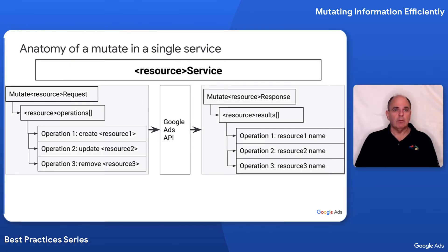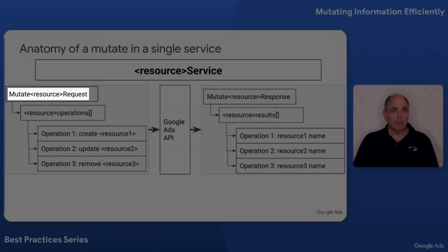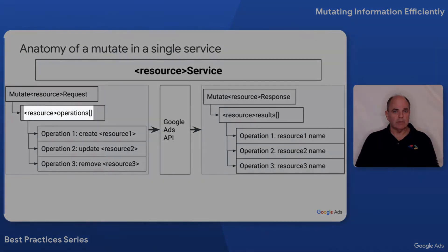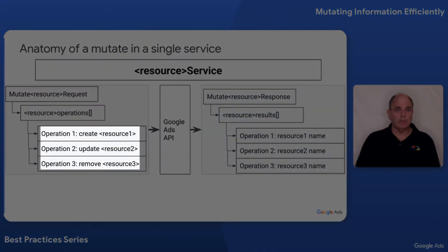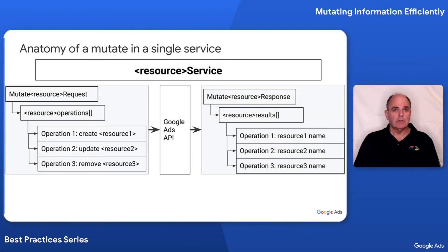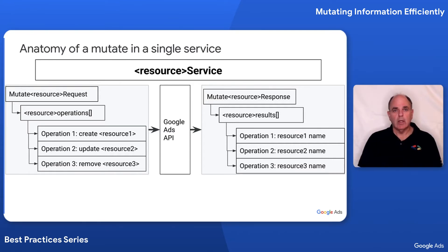Let's break down the Mutate of a single service. When mutating through a single service, you create a request. The request consists of a series of operations. Each operation will either create, update, or remove a resource. Any combination of operations can be in a single request. So you could have one request with 100 create operations, 100 update operations, or any mix of creates, updates, and removes in a given set of operations inside a single request.